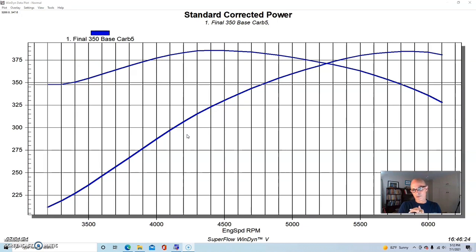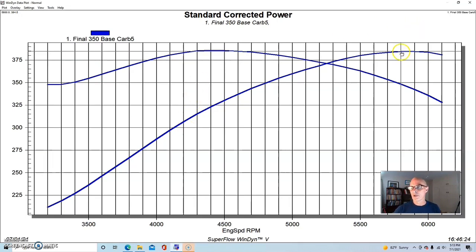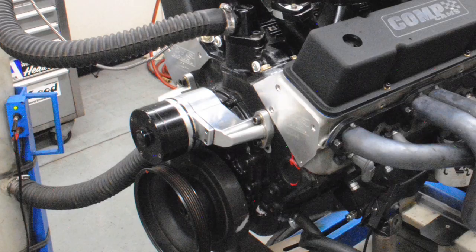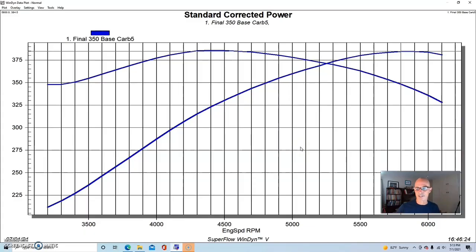We had the Vortec basic short block with who knows how many miles, and it seemed like it was still running good. But with the heads, cam, and intake, and we also ran inch and three quarter long tube headers, a Meziere electric water pump on the front of it, so no accessories, all of that stuff had long since been removed.